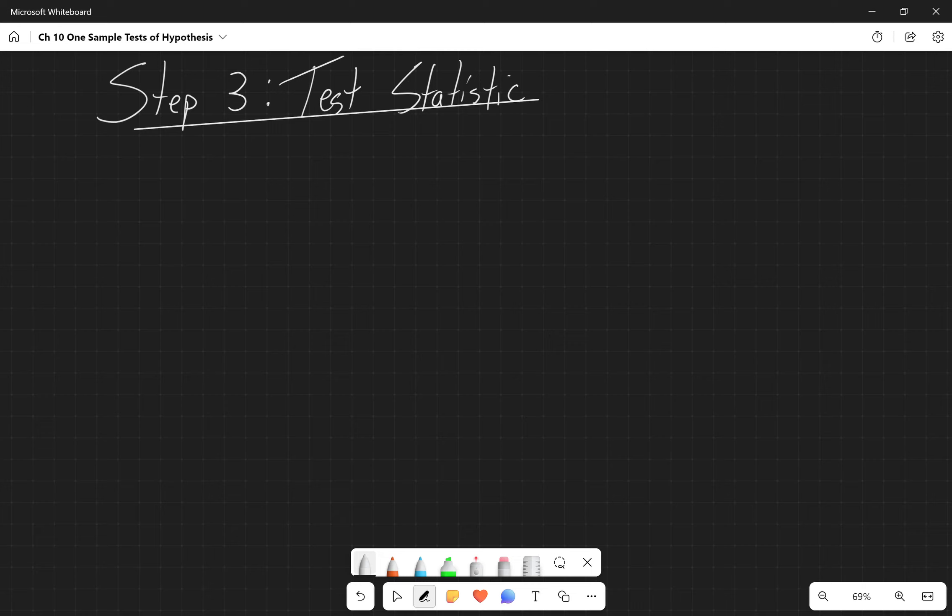So step three is usually what we jump to when we have a question on the homework or the exam, right? The prompt gives us enough that we can ascertain the null hypothesis and alternative hypothesis. We don't necessarily have to write that down. Of course we should, but a lot of times we're not going to because we're going to just try to get the answer as quickly as possible, right?